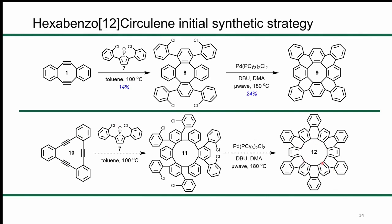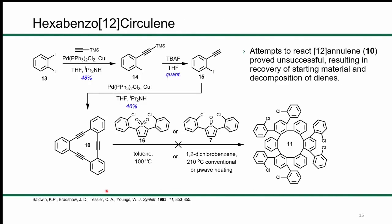My main project was to synthesize the 12-membered derivative, hexabenzo-12-circulene, using a nearly identical synthetic strategy: starting with compound 10 (12-annulene), running a Diels-Alder reaction, then Pd-catalyzed arylation. Unfortunately, using either of our two highly reactive dienes in toluene or 1,2-dichlorobenzene up to 210°C using conventional or microwave heating did not lead to any desired product. I got essentially quantitative recovery of starting material and decomposition products of the dienes. This wasn't entirely surprising — all the alkynes in this molecule are planar and linear, so they're much more stable than the previous diene.